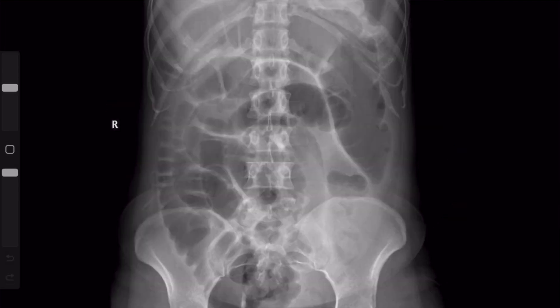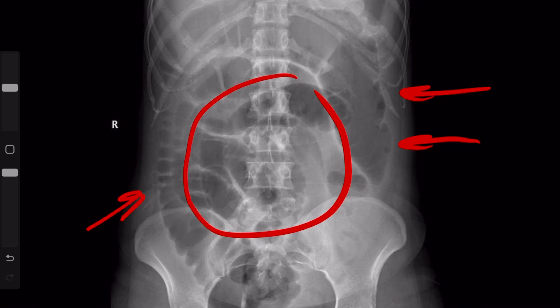Contrasting this with a large bowel obstruction — notice again you have gaseous distension of multiple bowel loops. To tell small from large bowel: small bowel is located centrally, and we do have some distended small bowel loops here. With the colon, you see these haustral markings, which I'm outlining here — these are characteristic of the colon. If you see haustral markings on a dilated loop of bowel, that is dilated colon. In this case there is a large bowel obstruction, with secondary dilation of the central small bowel loops, while the peripheral bowel loops are dilated colon.